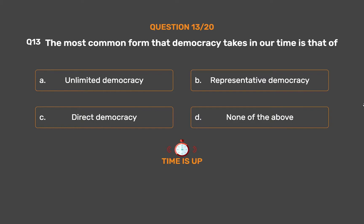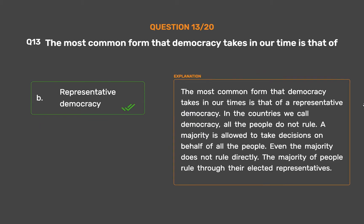The correct answer is Option B: Representative democracy. The most common form that democracy takes in our times is that of a representative democracy. In the countries we call democracy, all the people do not rule. A majority is allowed to take decisions on behalf of all the people. Even the majority does not rule directly — the majority rule through their elected representatives.